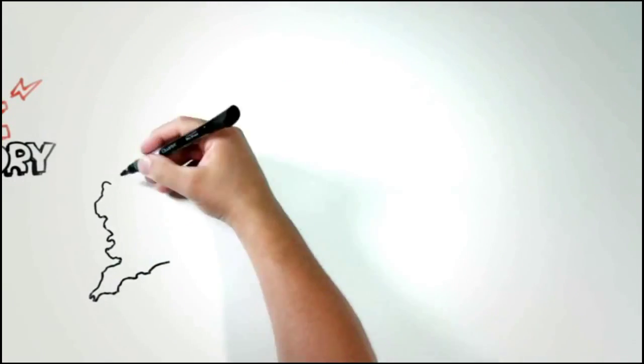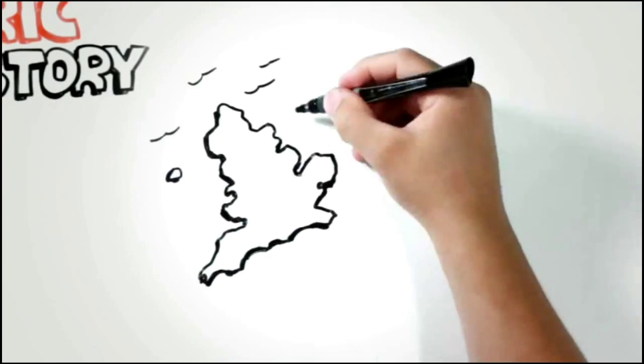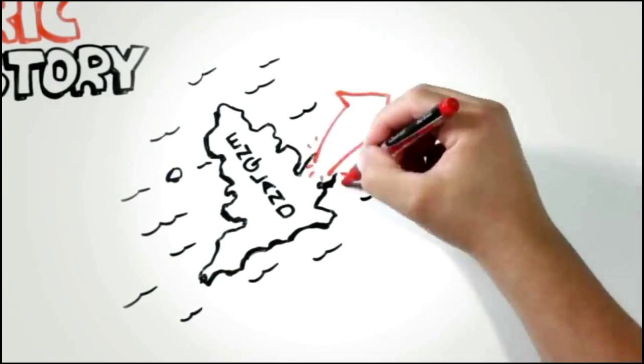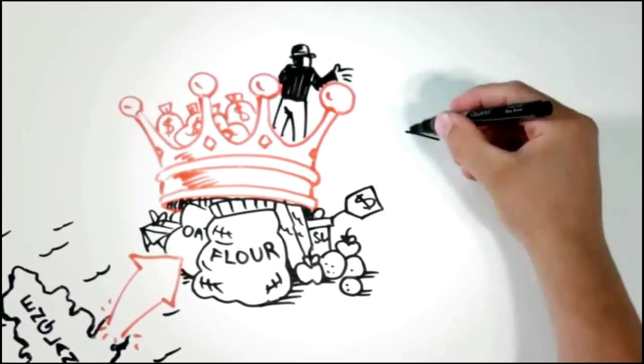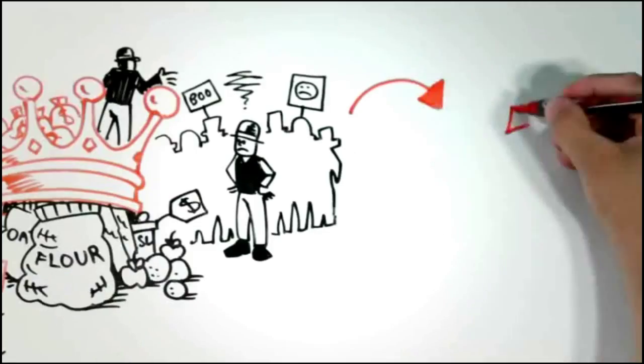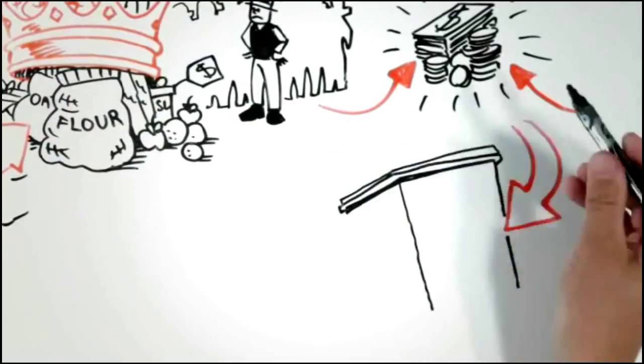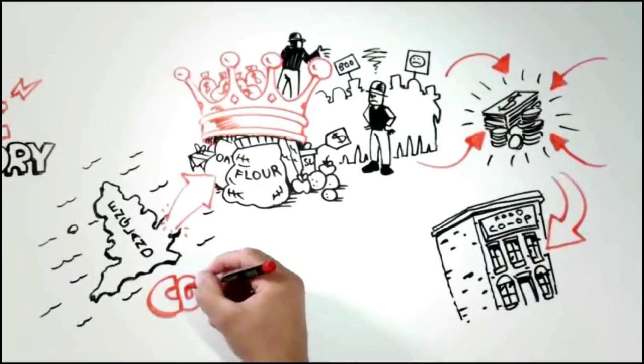Our story starts back in 1844 in not-so-merry England, where a group of weavers fed up with the high price of company store groceries pooled their money to buy their own food, creating a new form of business: the cooperative.